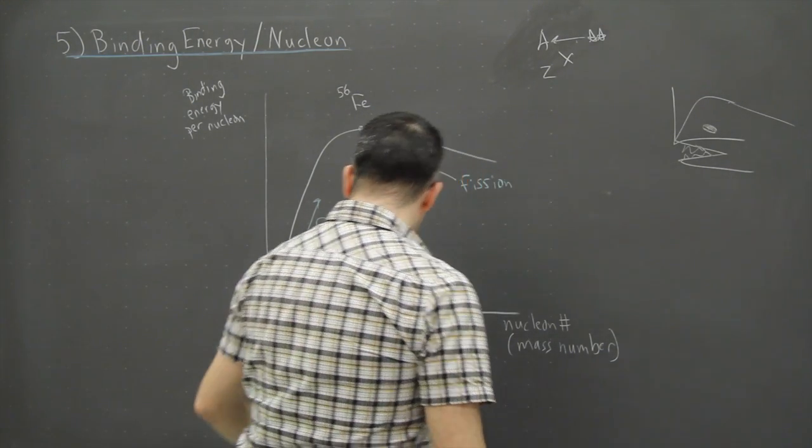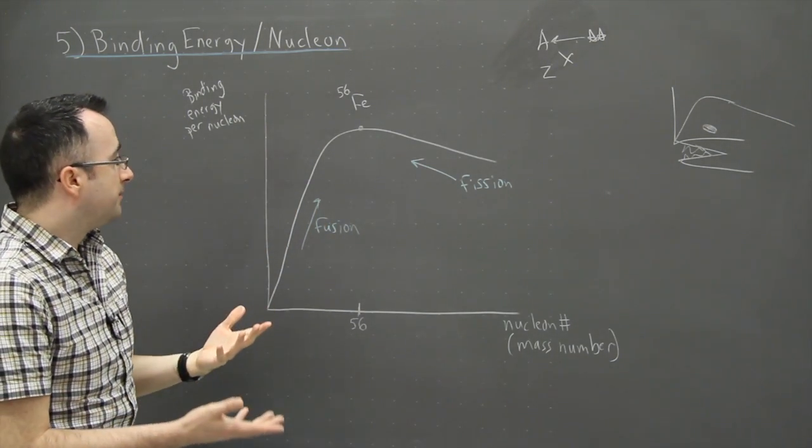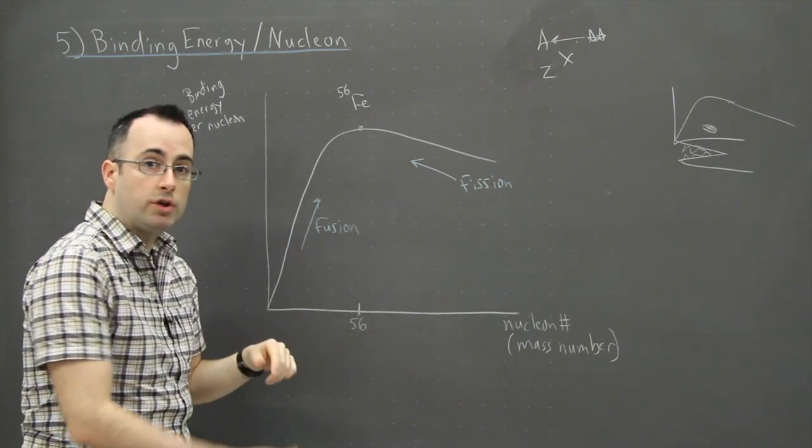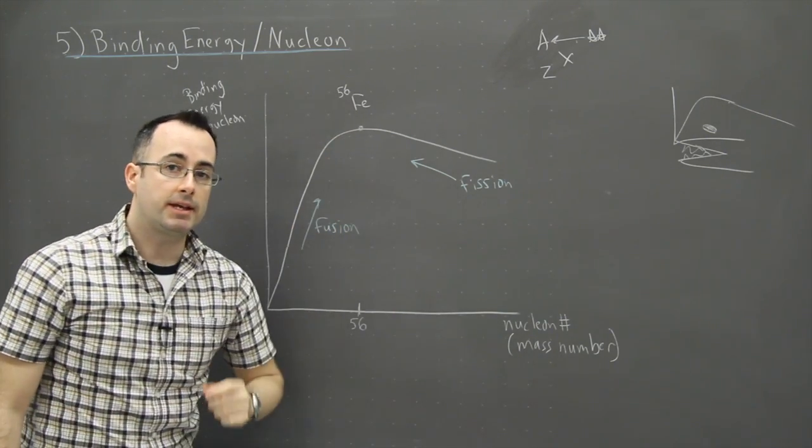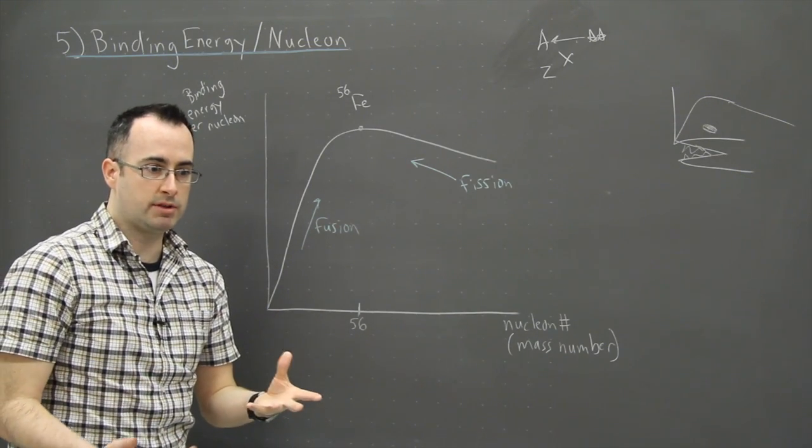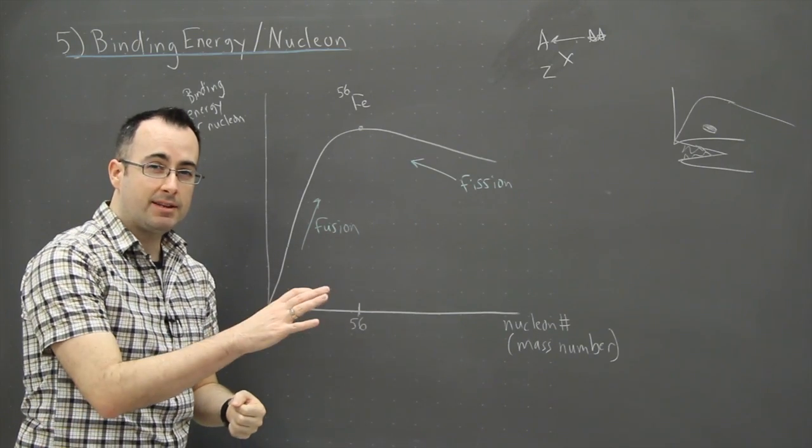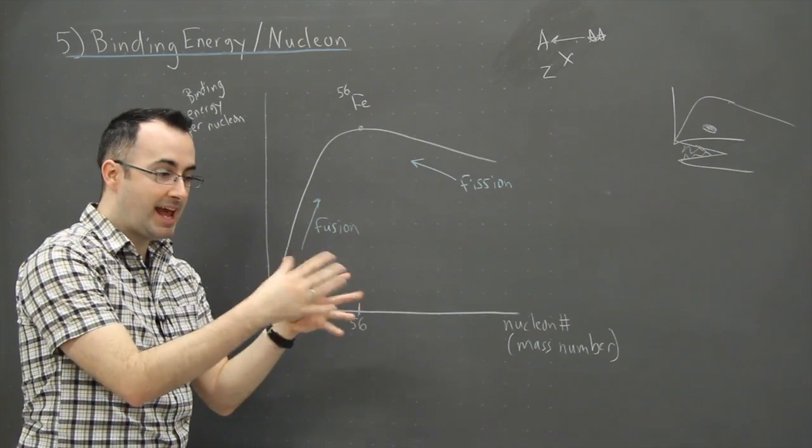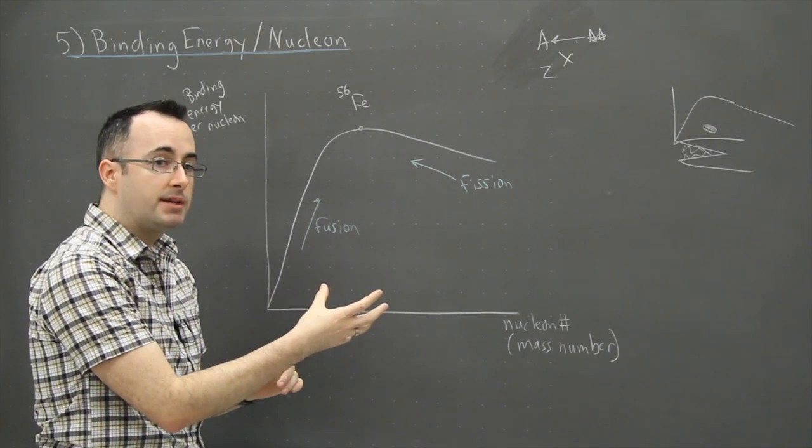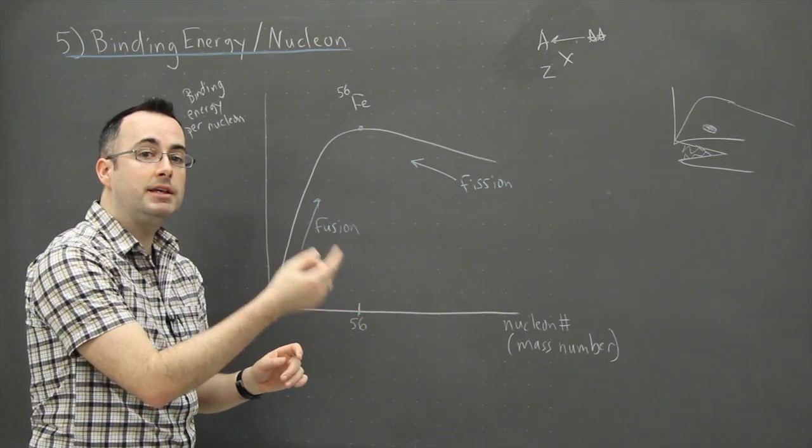Now the key thing here is that a reaction is favorable. So there's two different types of reactions. You can have fusion or you can have fission. Now the key thing is that a reaction is energetically favorable, in other words it wants to happen easily, if the products, so that's like the end result of your reaction that you have.